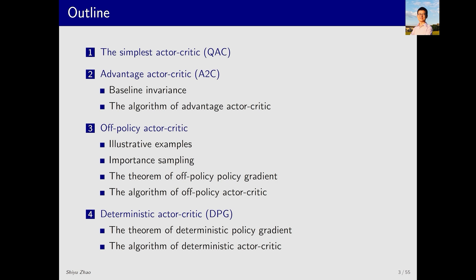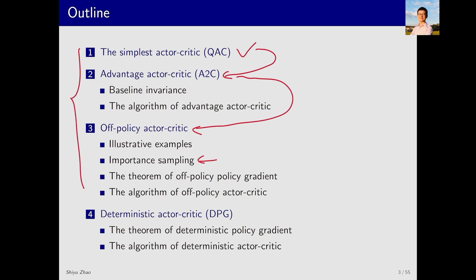This is the outline for today's lecture. First, I will introduce a very simple actor-critic algorithm — from now on I may refer to actor-critic as AC. While this AC algorithm is quite simple, it plays a crucial role in revealing the core idea behind the actor-critic method. Building on this, I will then introduce the advantage actor-critic method. Next, I will extend this technique further by showing how to transform an on-policy actor-critic method into off-policy, which requires a very important technique called importance sampling. These three topics are interconnected, and the later topics are extensions of the earlier ones. They share a common characteristic: just like in the previous lecture, the policies here are all stochastic. Can we use deterministic policies? Yes, we can. In the final section, I will introduce a deterministic actor-critic method.